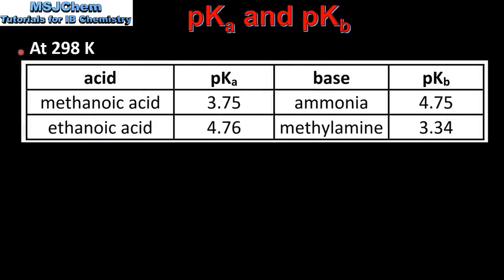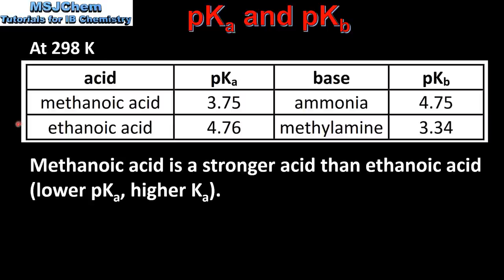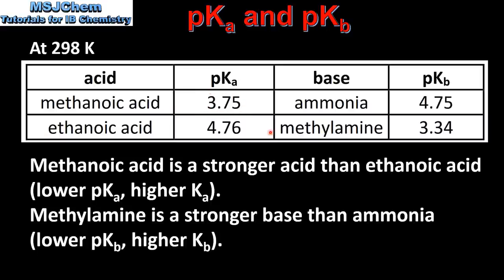Let's look at an example. Here we have the values of the pKa and the pKb for some acids and bases at 298K. Looking at the acids first, methanoic acid is a stronger acid than ethanoic acid — it has a lower value for the pKa and a higher value for the Ka. For the bases, methyl amine is a stronger base than ammonia — it has a lower value for the pKb and a higher value for the Kb.